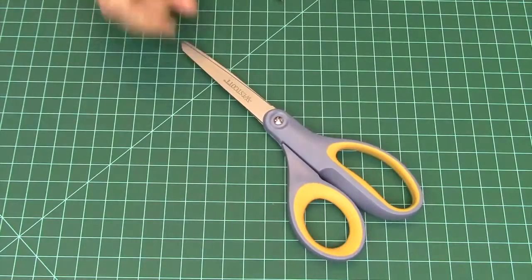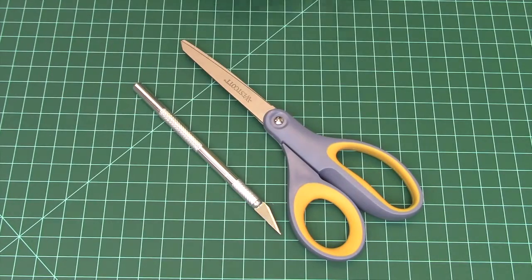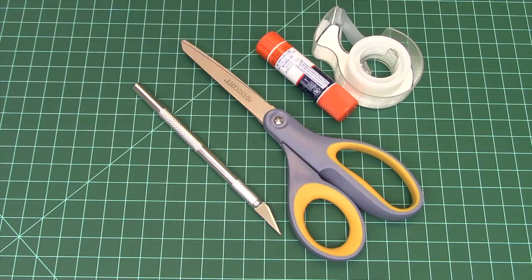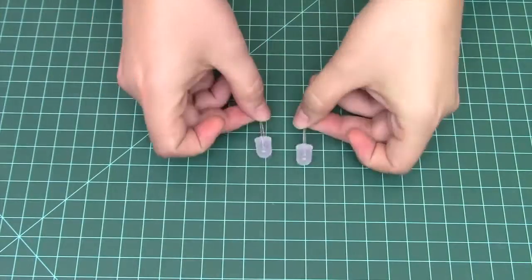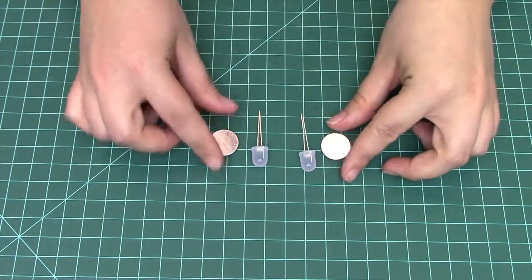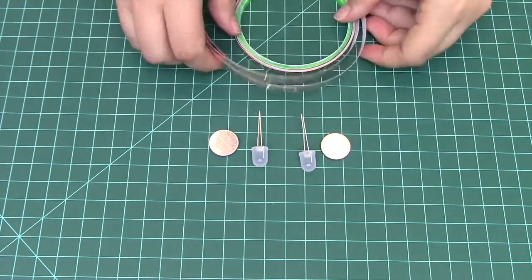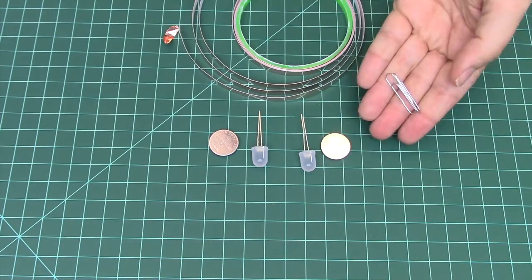You will need scissors, X-Acto knife, tape, glue stick, and a pencil. You'll also need LEDs, 2032 batteries, conductive tape, and paper clips.